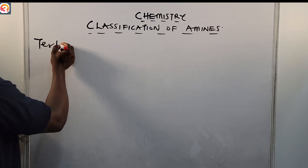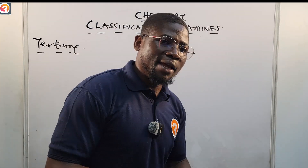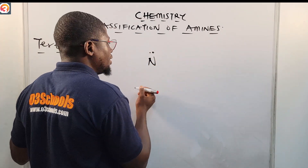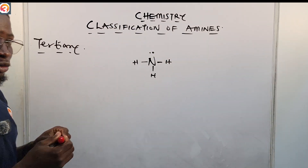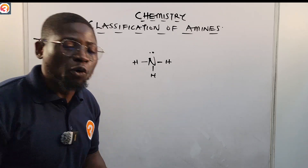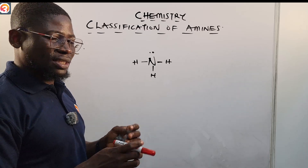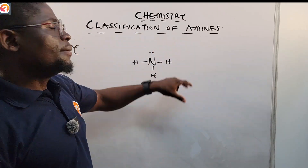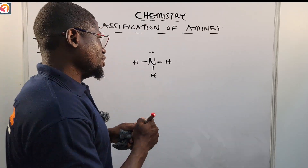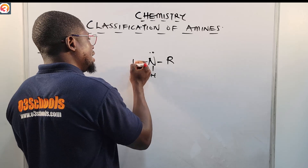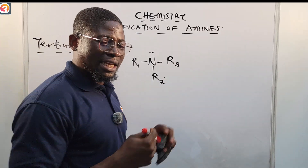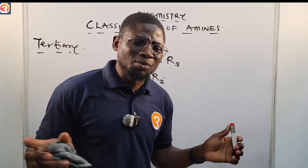From the word 'tertiary,' you can tell it involves three. Since ammonia only has three hydrogen atoms, if all three hydrogen atoms in ammonia are replaced by R groups, we get a tertiary amine — a third-degree amine. So when all the hydrogen atoms in ammonia have been replaced by three R groups — which may be the same or different — we call that a tertiary amine.